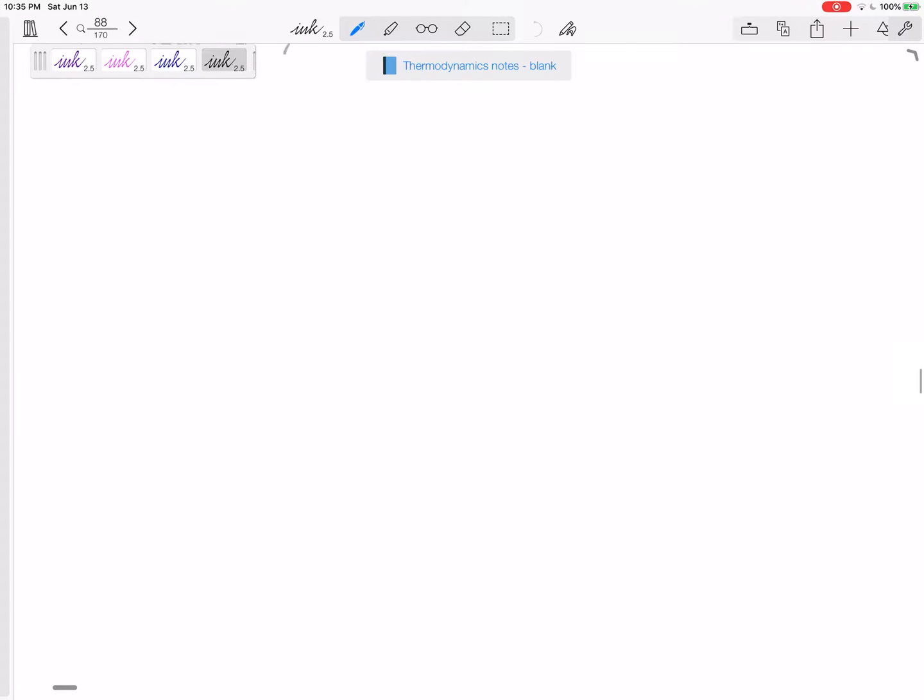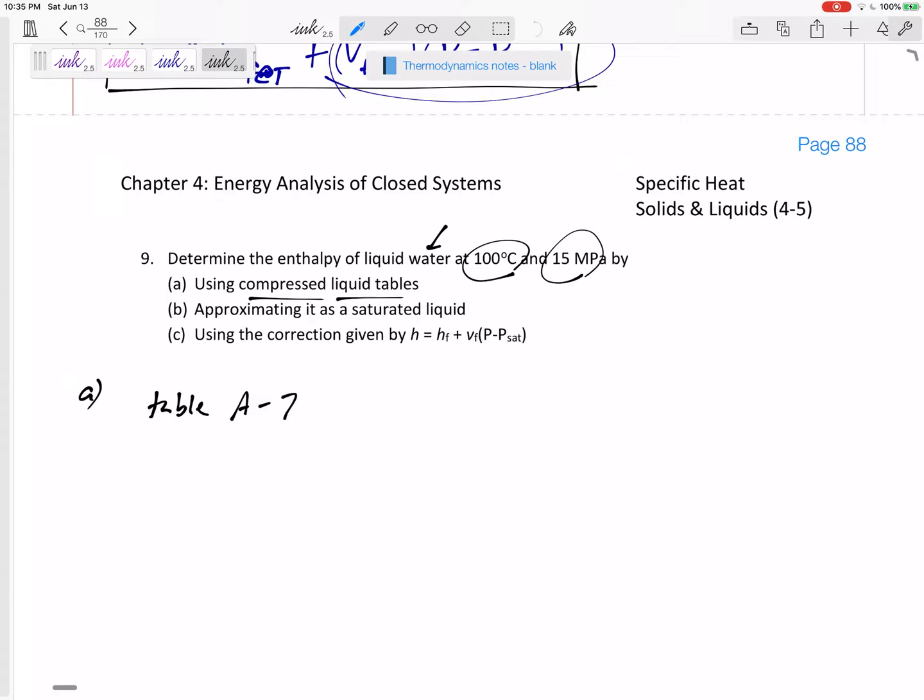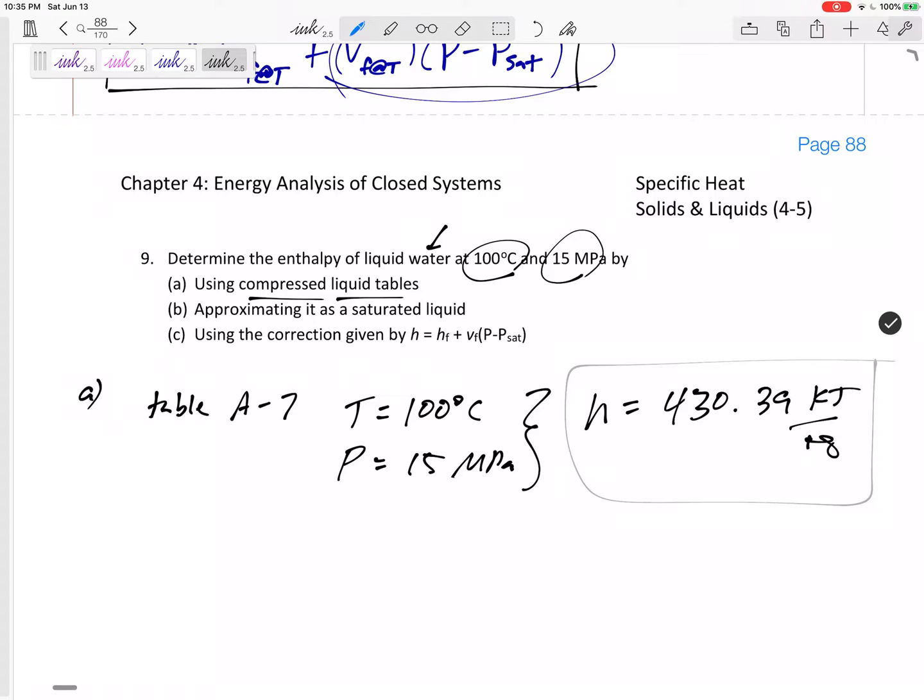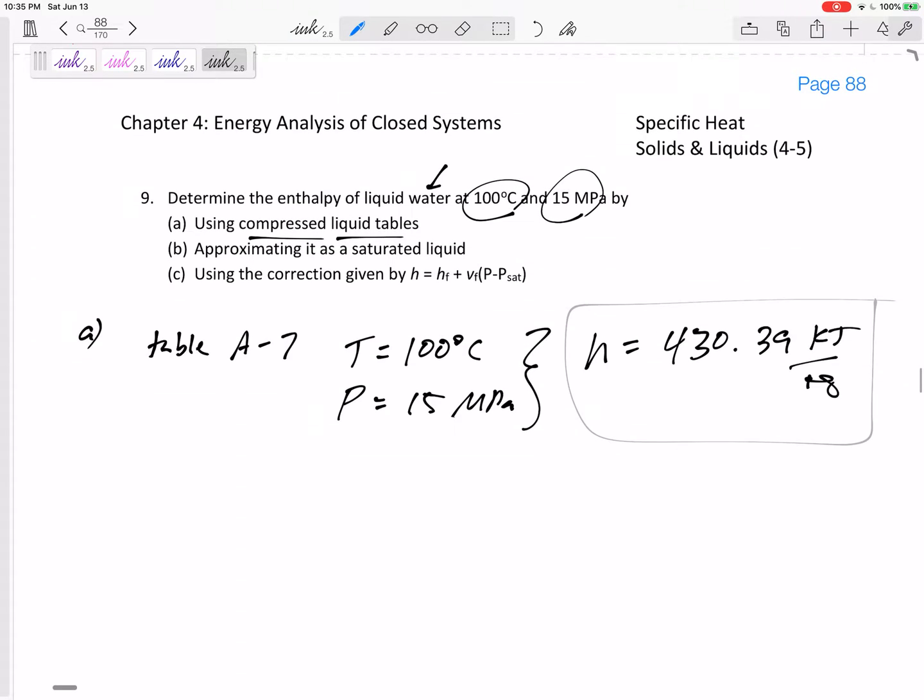So table A-7, at a temperature of 100 degrees C and pressure of 15 MPa. From table A-7, I would get an H of 430.39 kilojoules per kilogram.